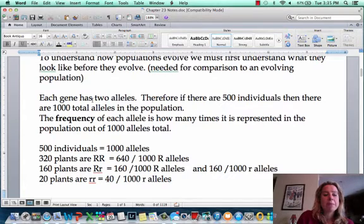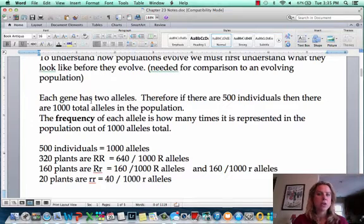Remember that every gene has two alleles in general. You can have homozygous dominant, heterozygous, or homozygous recessive. If we have 500 individuals in our population and each of them has two alleles, that tells us there are 1,000 total alleles in the population. The frequency is just how many times out of 1,000 that allele shows up.